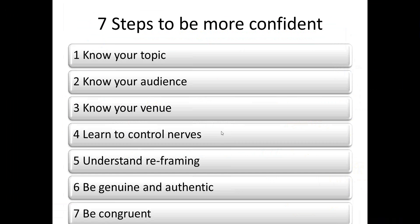Learn to control your nerves — some steps will help you put those nerves under control, not eliminate them. Some reframing, a changing of your mindset, some looking at things from a different direction will help you appear more confident. When you're genuine and authentic, your nerves really don't matter — people just think you're confident. Make sure everything you do is congruent with who you are. These seven steps will help you, from the audience's perspective, appear really confident and calm, as though you're in the groove and don't have a worry in the world.